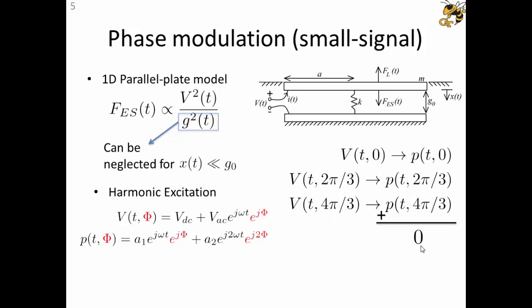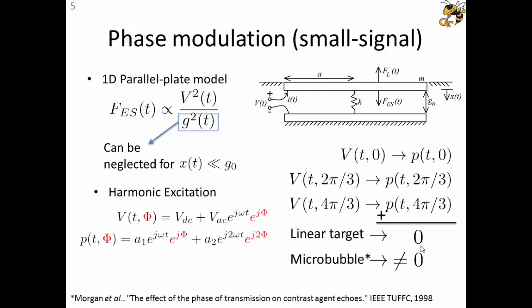This is valid for a linear reflector. If there are microbubbles present in the image field of view, this quadratic relationship between the voltage and the return echo is not valid anymore. So the microbubble and the linear target can be separated, distinguished. However, we are in the small signal regime and we are not fully utilizing the full potential of the CMUT.